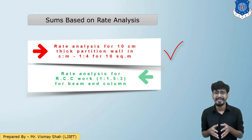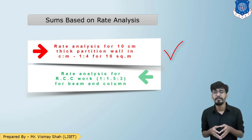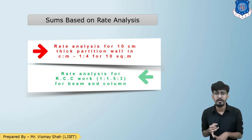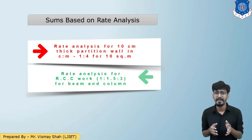Today in this session we are going to see the rate analysis for a 10 centimeter thick partition wall in cement mortar ratio 1:4 for 10 meter square, and then the rate analysis for RCC beam and column having ratio 1:1.5:3. So we are going to see two numericals: first the partition wall with quantity 10 meter square and thickness 10 centimeter, and second the RCC work for beam and column in ratio 1:1.5:3.